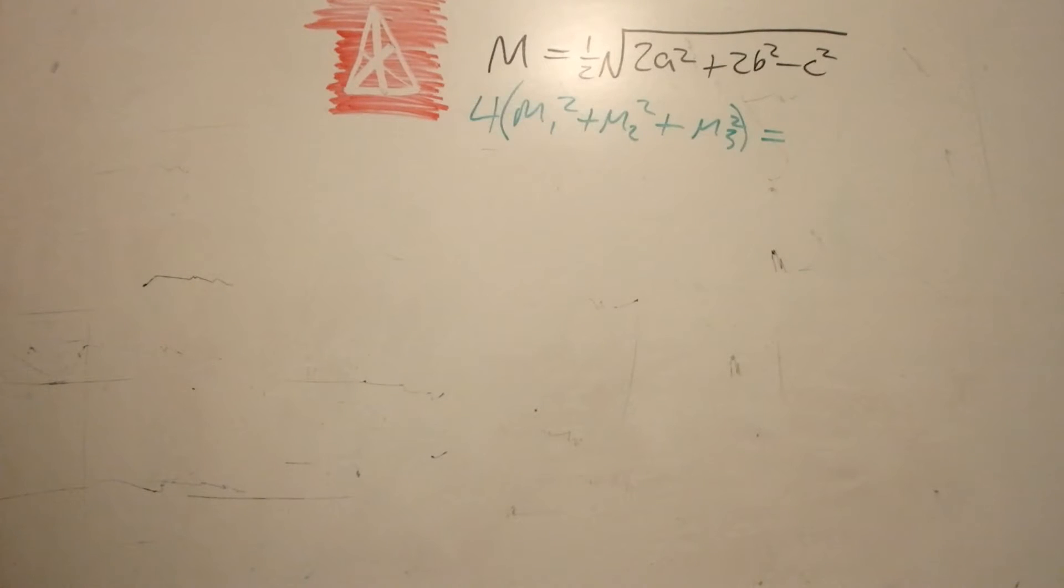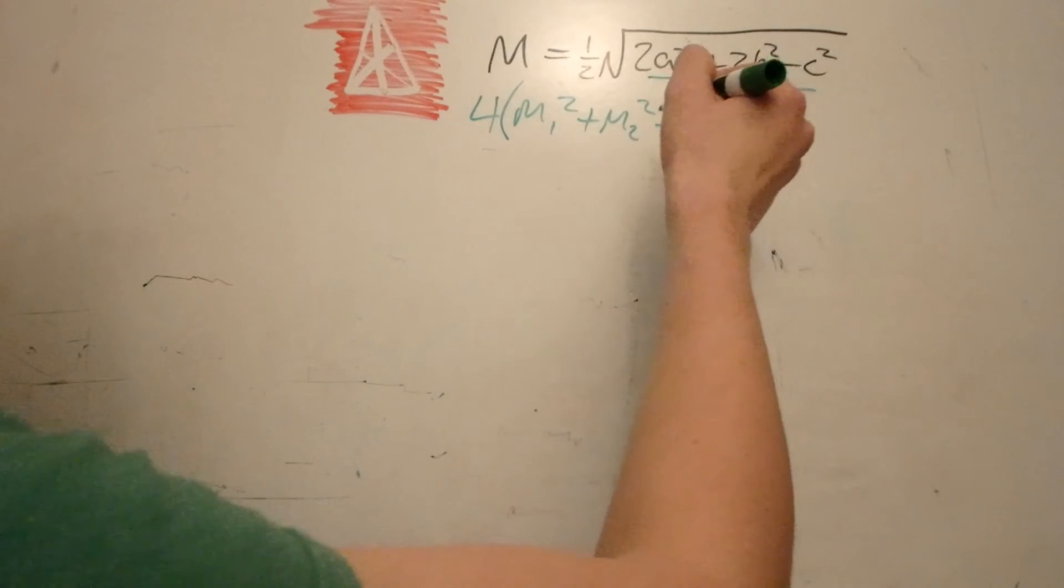We're going to square the 2 to give us a 4. We can pull out all the coefficients, giving us the sum of the squares of the three medians. And so now what we need to look at is these three terms.